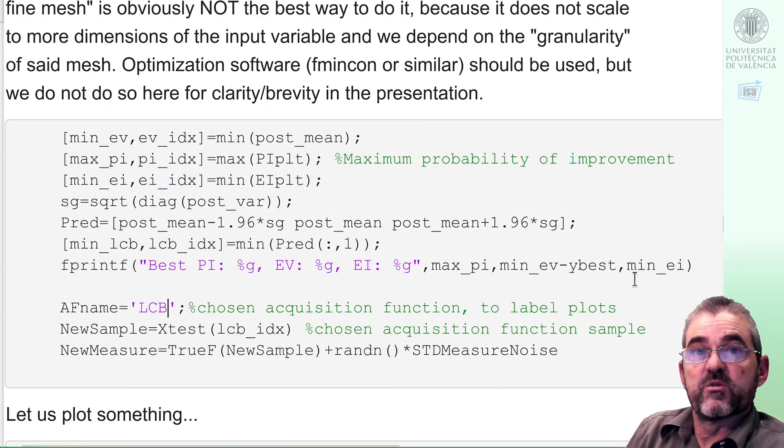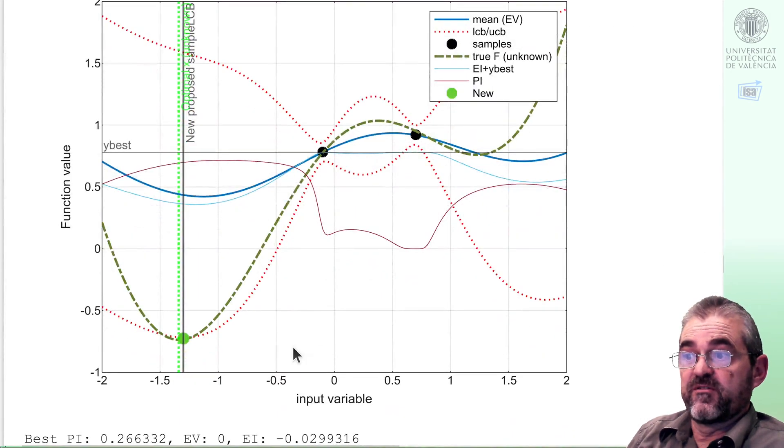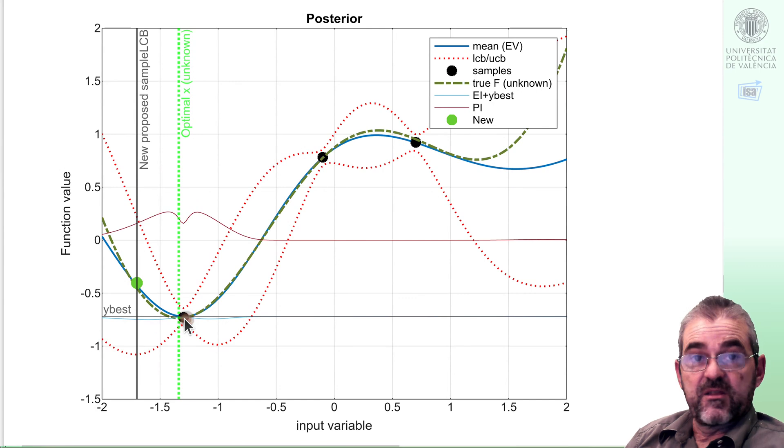And to end this video, if we choose the lowest confidence bound it's the most exploratory acquisition function. The first sample, the minimum lower confidence bound, it's almost there. And the second sample even if it's very unlikely to be this low, in fact we were not lucky and it's far above my best sample, but it is exploratory we try there.